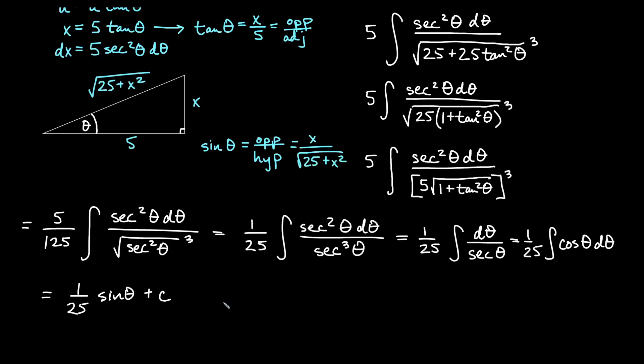So for this one here, we will get, multiplying the 1 over 25 times what we have for sine theta. So we'll get 1 times x on the top. And then on the bottom, we'll have a 25 times that root. So 25 times root 25 plus x squared plus c.